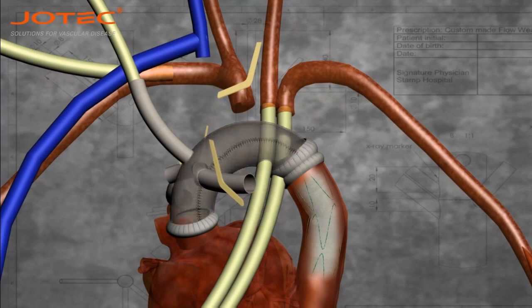Cannulation through the perfusion branch of the vascular prostheses. Restart of systemic perfusion. The selective anterior grade cerebral perfusion is still running through the cannulas.